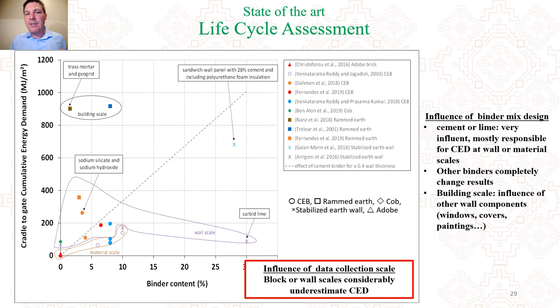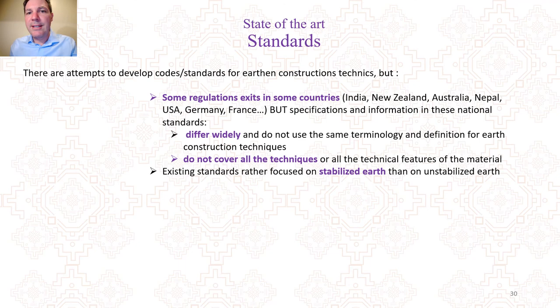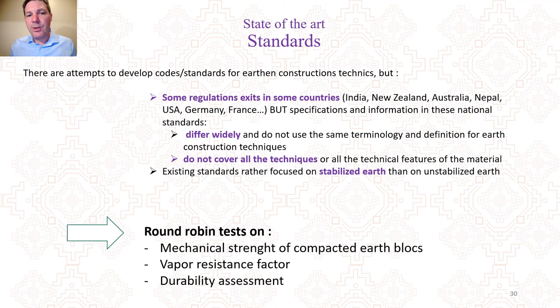To conclude this state-of-the-art study, we can see that regulations and tests exist all over the world for earth materials, but these tests really differ from one country to another, and some are not robust or repeatable. Given that conclusion, the idea was to make round-robin tests on the most problematic points identified: the mechanical strength assessment of compacted earth blocks, the vapour resistance factor, and durability assessment.